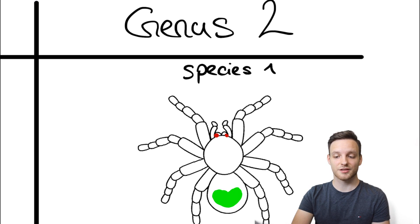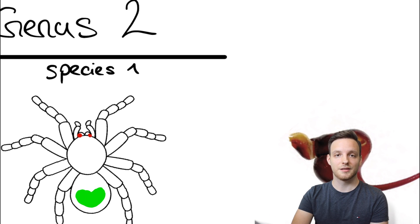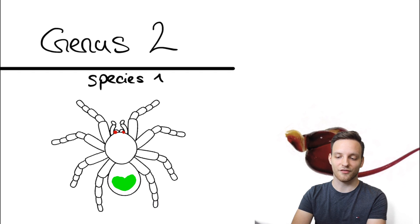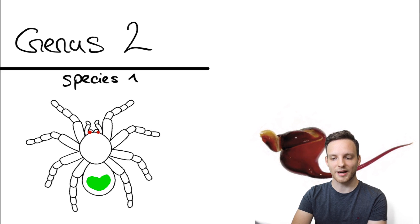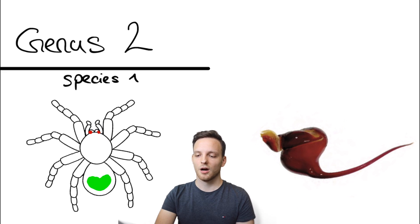We have genus number two species one. They have only these spines on the fangs, the red dots left and right, and they have this big urticating field of hair on the abdomen. Species number one furthermore has the bulbus which looks like this.